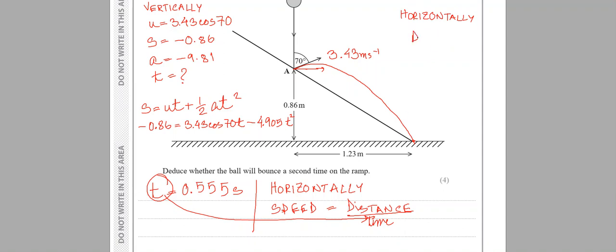Distance equals horizontal speed times time. The horizontal speed is 3.43 sin 70 times 0.555. The distance is 1.79 meters.